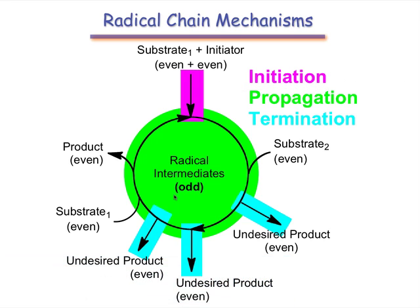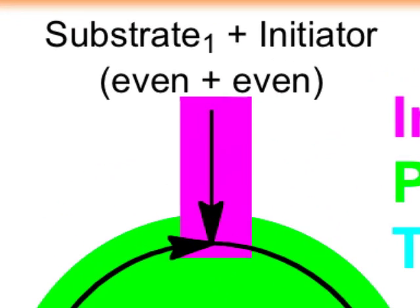Here's an overall generalized picture of a radical chain mechanism, or RCM. Every RCM has three general phases. Initiation, in which the initiator reacts with a small amount of substrate to produce an organic radical.